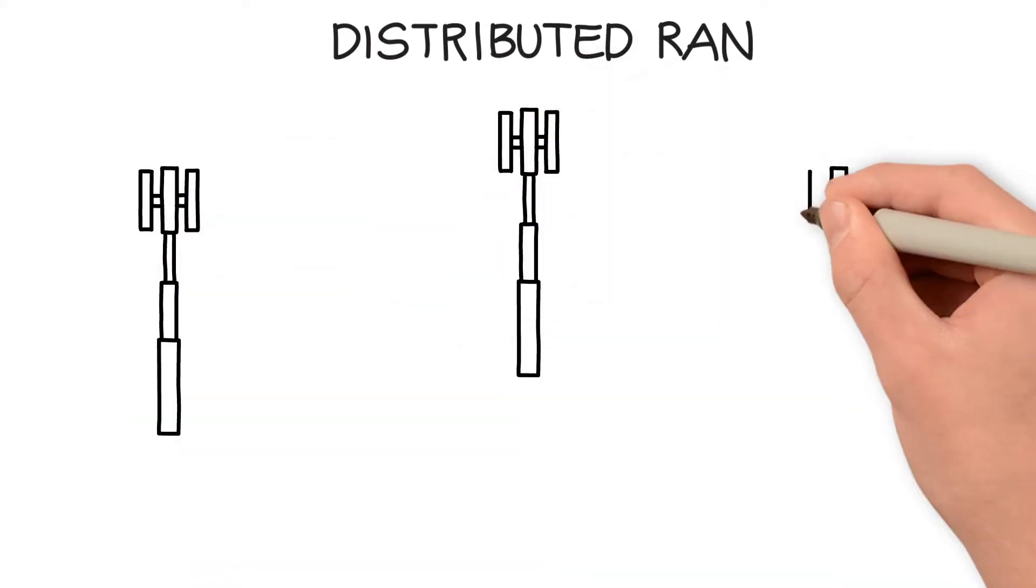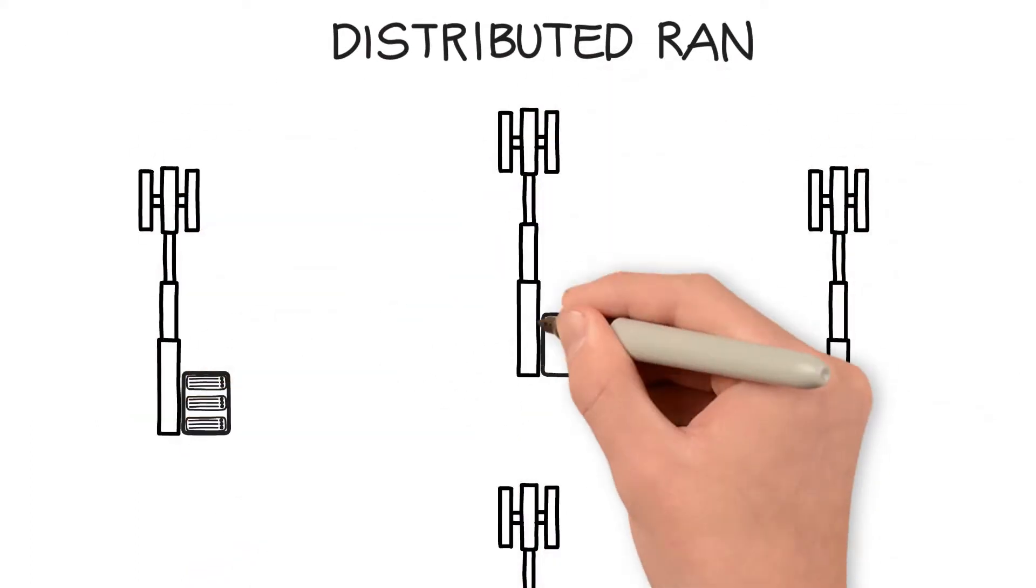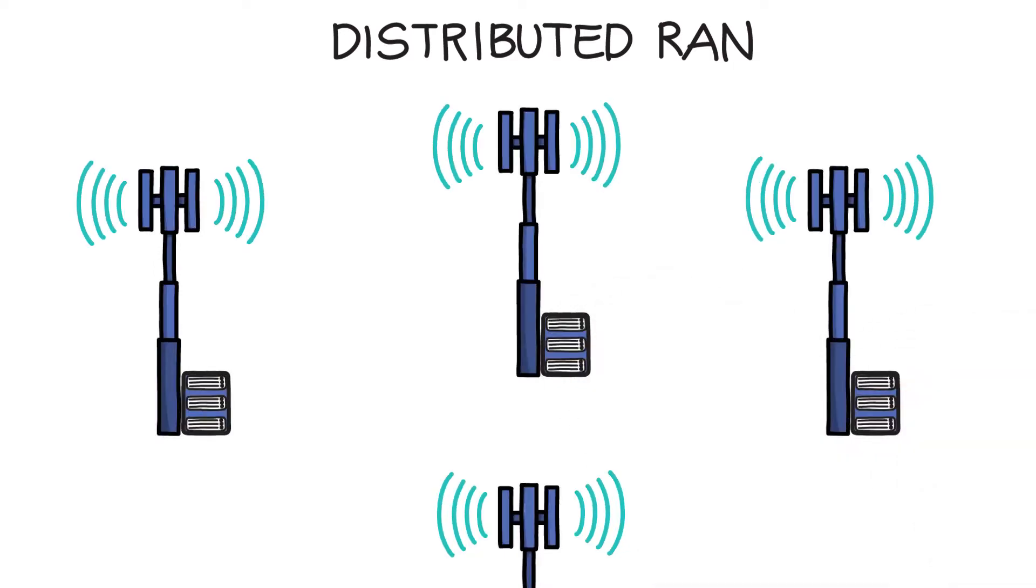D-RAN, or Distributed RAN, is a distributed network because it spreads its processing power over many independent radio towers. These towers are known as base stations.